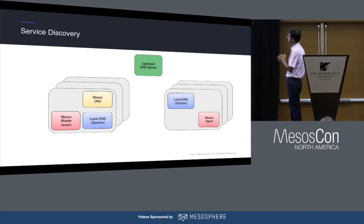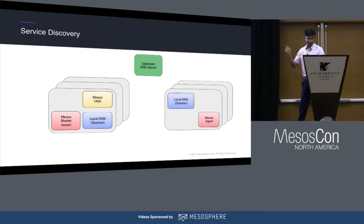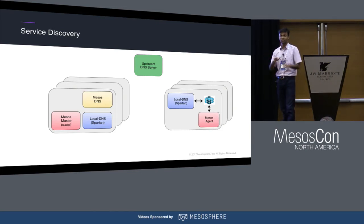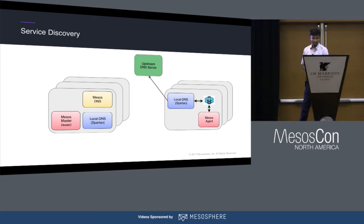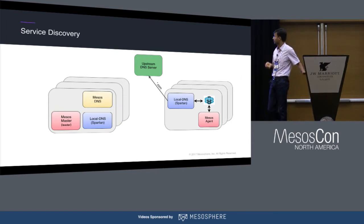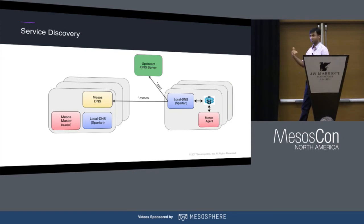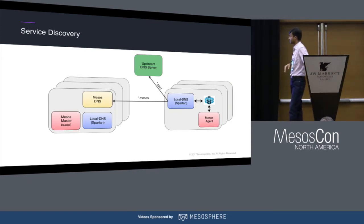To give you the full picture: in a cluster with masters and agent nodes, if a task queries local DNS, resolution happens locally on that agent. If the query is for something external to the cluster like a .com record, Spartan forwards it to the upstream. All .mesos queries go to Mesos DNS. That's how service discovery happens in DCOS.